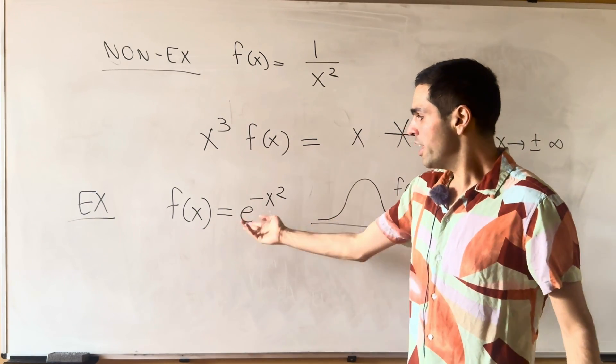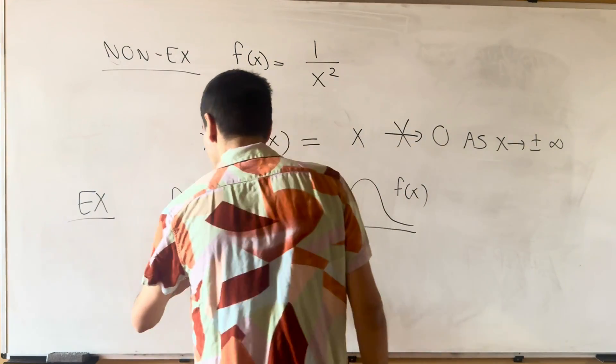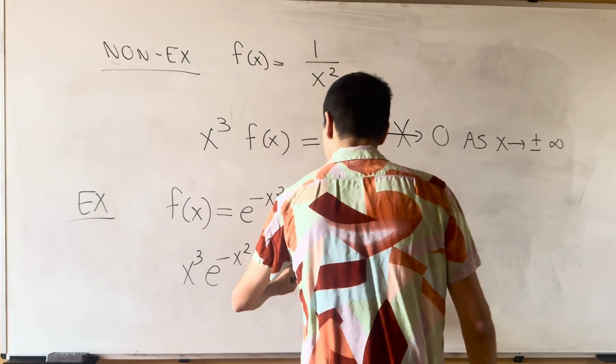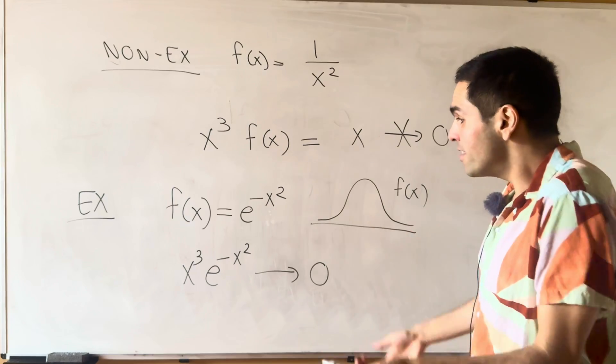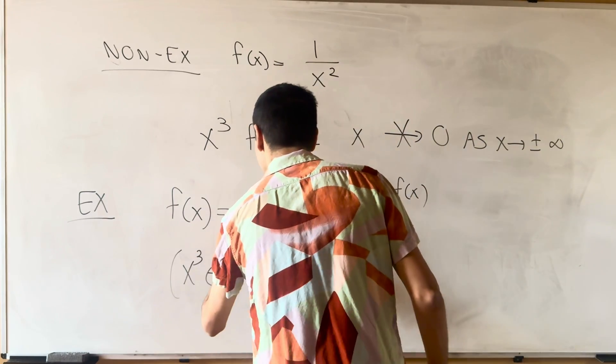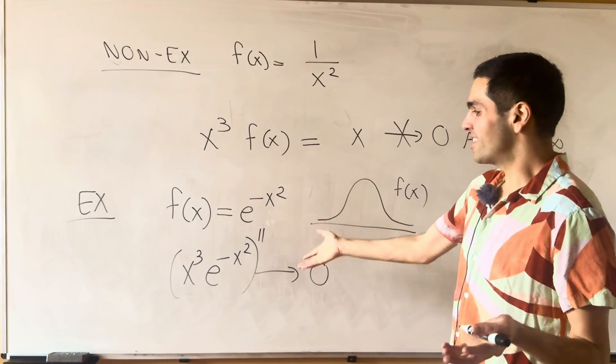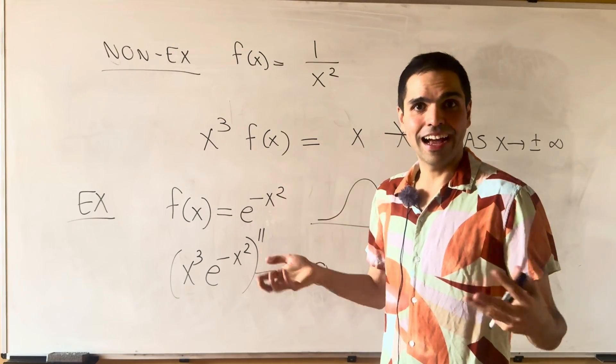But also, if you multiply f with any power of x, let's say x cubed e to the minus x squared, you can check that this still goes to zero. And same for any derivatives, for instance, the second derivative. So that's once again what the Schwarz class is saying.